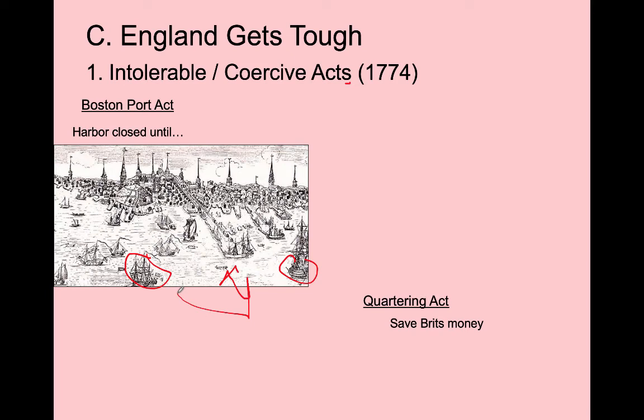Next is the Quartering Act. England needs to keep troops in Boston to enforce order, but doesn't want to go further into debt housing them. So they force colonists to 'quarter'—house—the troops. Instead of the government paying for barracks, citizens of Boston must house these British redcoats in their homes, give them beds, and feed them. This is a massive invasion of privacy: not only has the king taken your job through the Boston Port Act, but now you must house and feed the soldiers there to enforce the law against you.